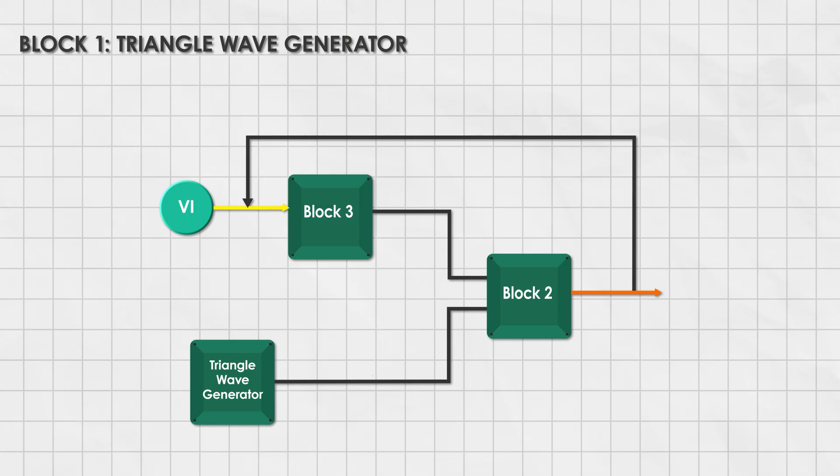Think of this as the heartbeat of the whole system. It continuously creates a voltage that rises and falls. Basically, a triangular wave. And this wave will be the reference for creating a PWM signal.